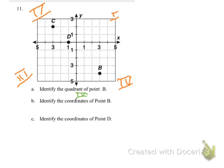Part B says to identify the coordinates of point B. So when we're finding a coordinate, what do we look at first? The X or the Y? X. Okay, so we look at X first, and then we take a look at Y. So it goes X, Y.